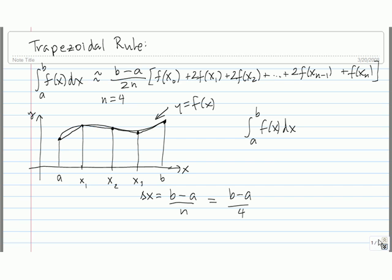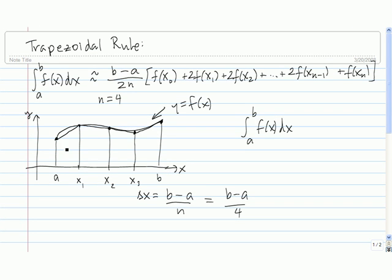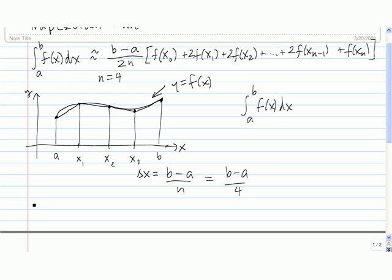Approximating this integral using those 4 trapezoids means the integral is approximately equal to the sum of the areas of these 4 trapezoids. Let's recall the formula for the area of a trapezoid: we take base 1 plus base 2, multiply by one half, and then multiply by the height of the trapezoid — one half times the sum of the bases times the height.